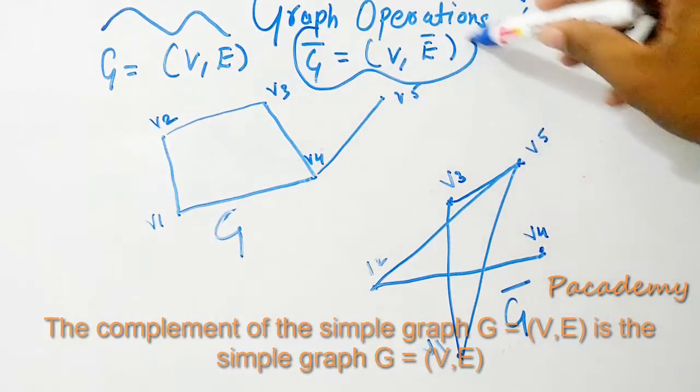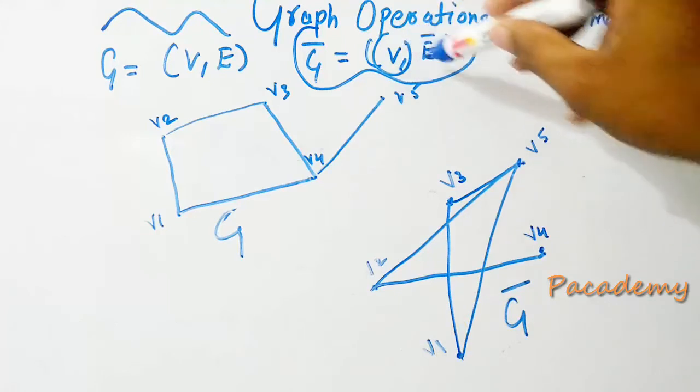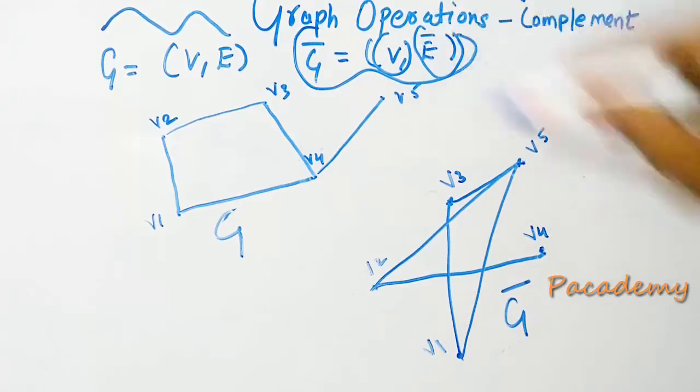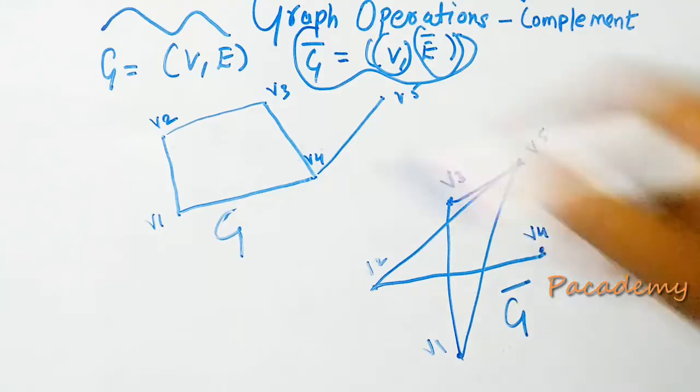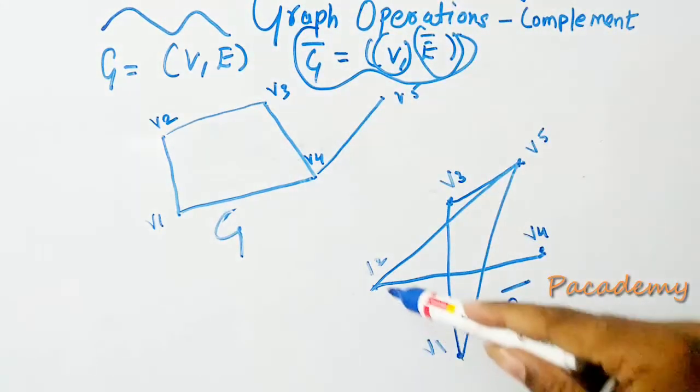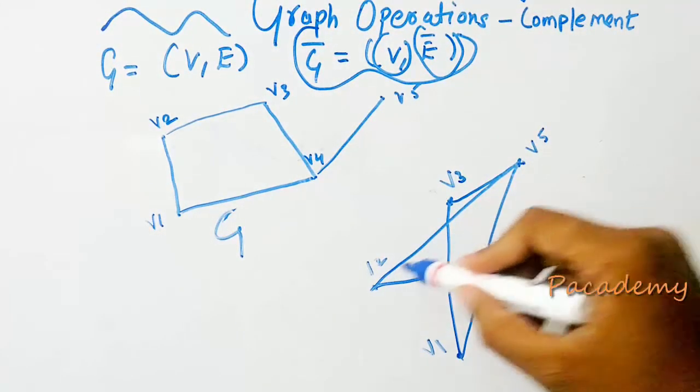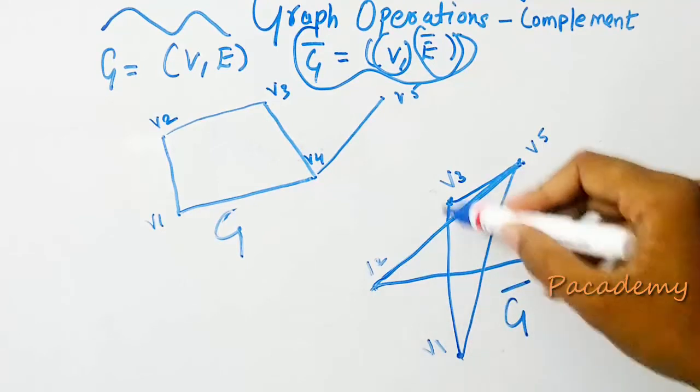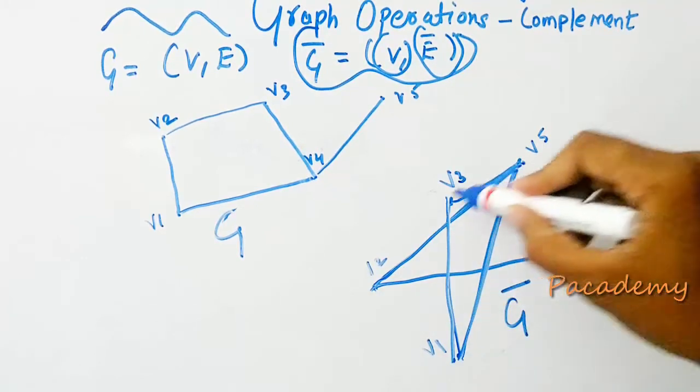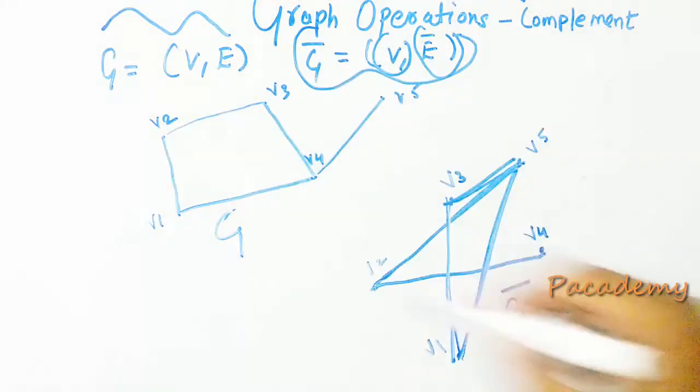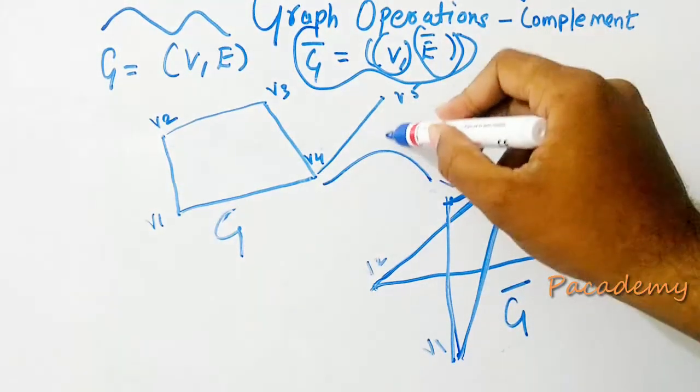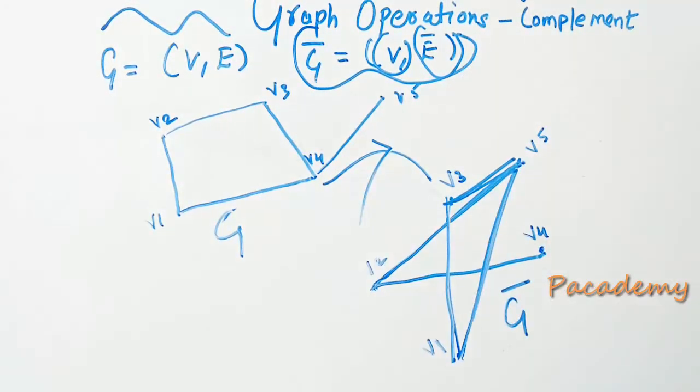What is the complement of the graph? It's keeping all the vertices the same and having the edges which are not in the first graph. If you see the two graphs, we have these edges here which are not in the first graph. So this forms the complement of the graph.